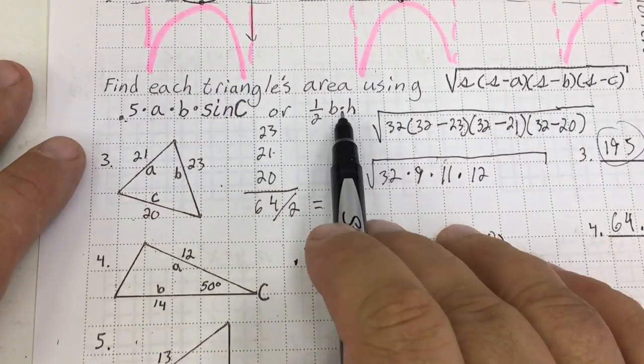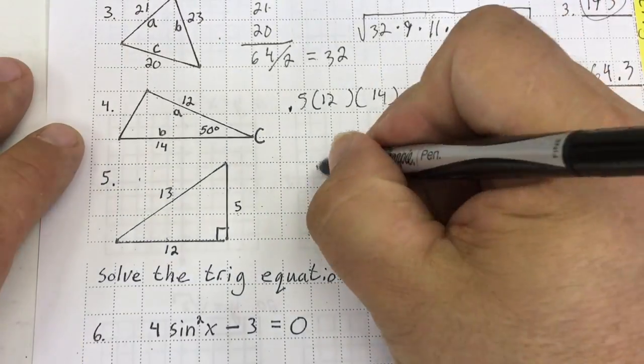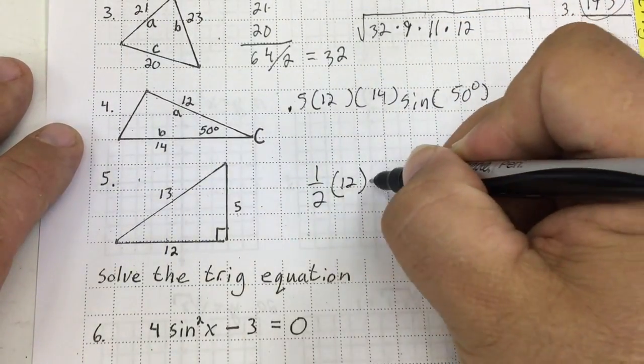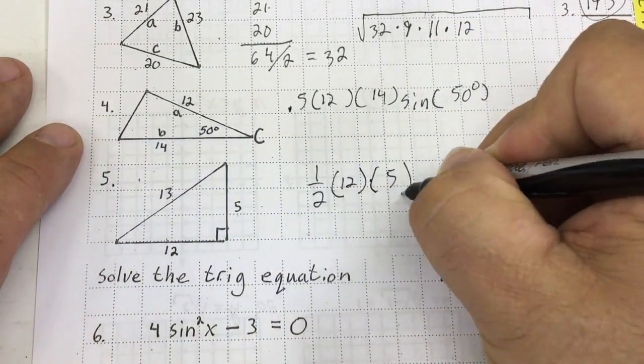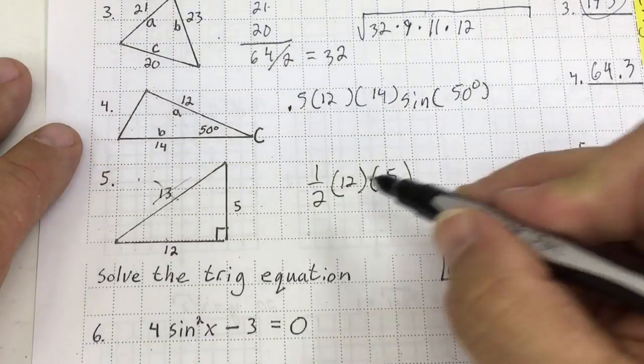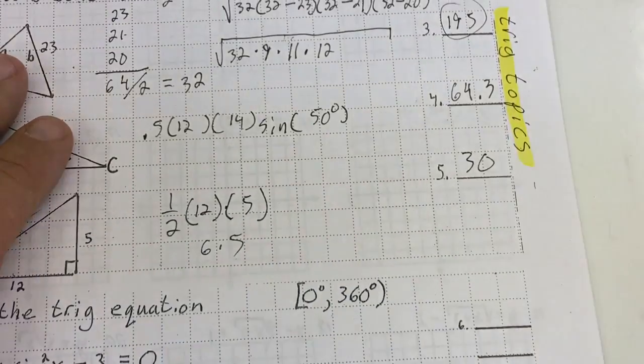For number 5, we used the middle school formula: one half base times height. So it's going to be one half of the base, 12, times the height, 5. This is a distractor — we don't need that; it's the hypotenuse in this case. Half of 12 is 6, times 5, that's going to give me 30.